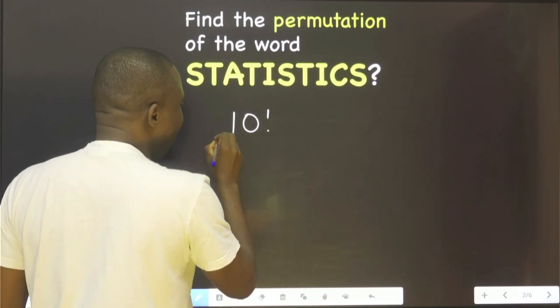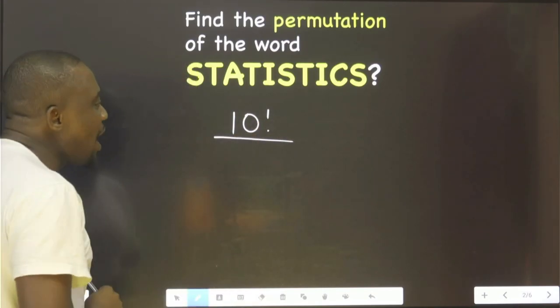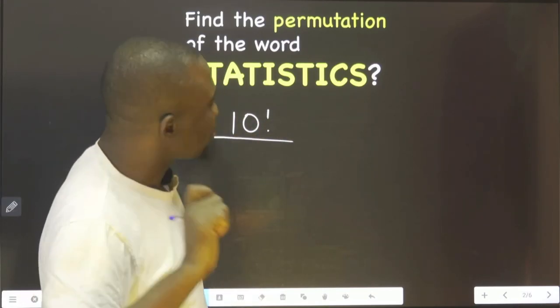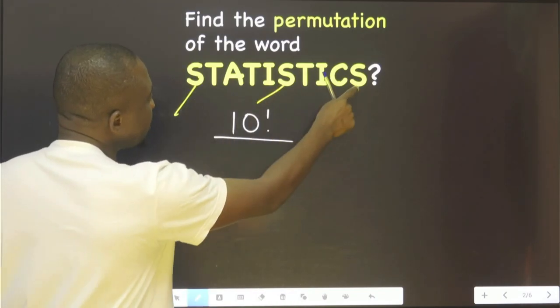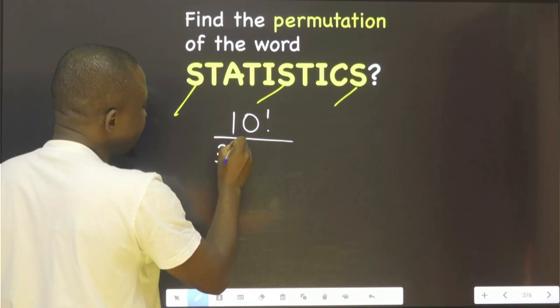Ten factorial over... then you count all the repetition. How many S's do we have? One, two, three. That is 3 factorial.